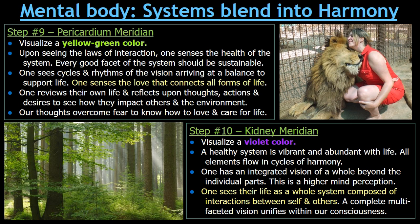Steps 9 and 10 are titled Systems Blend into Harmony. The colors in each step correspond to meridians. Here at Step 9, the Pericardium Meridian — visualize a yellow-green color. Upon seeing the laws of interaction from Step 8, one senses the health of the system. Every good facet of the system should be sustainable. One sees cycles and rhythms of the vision arriving at a balance to support life.